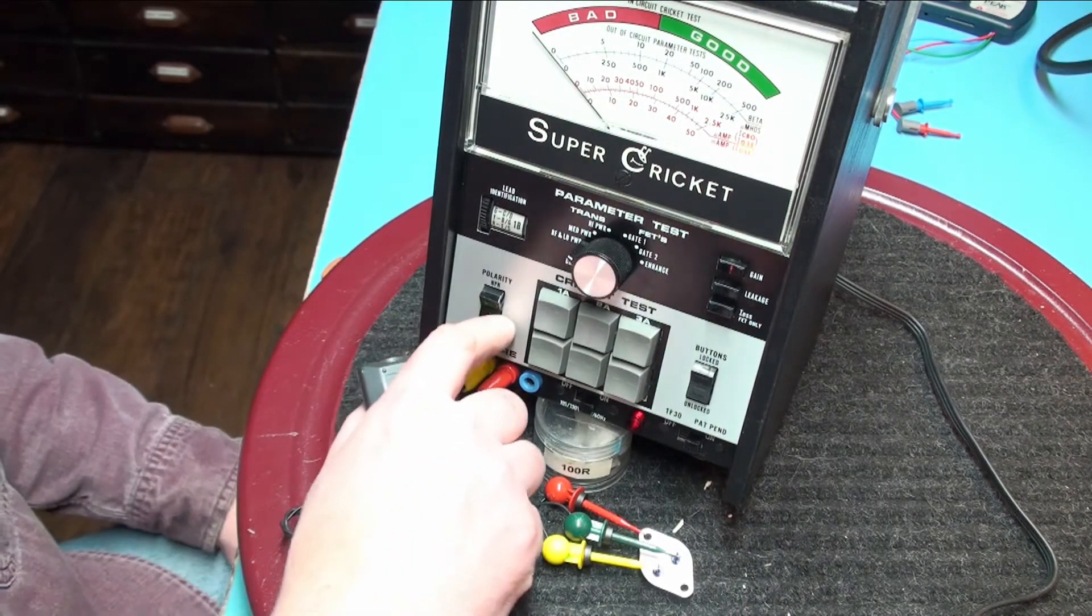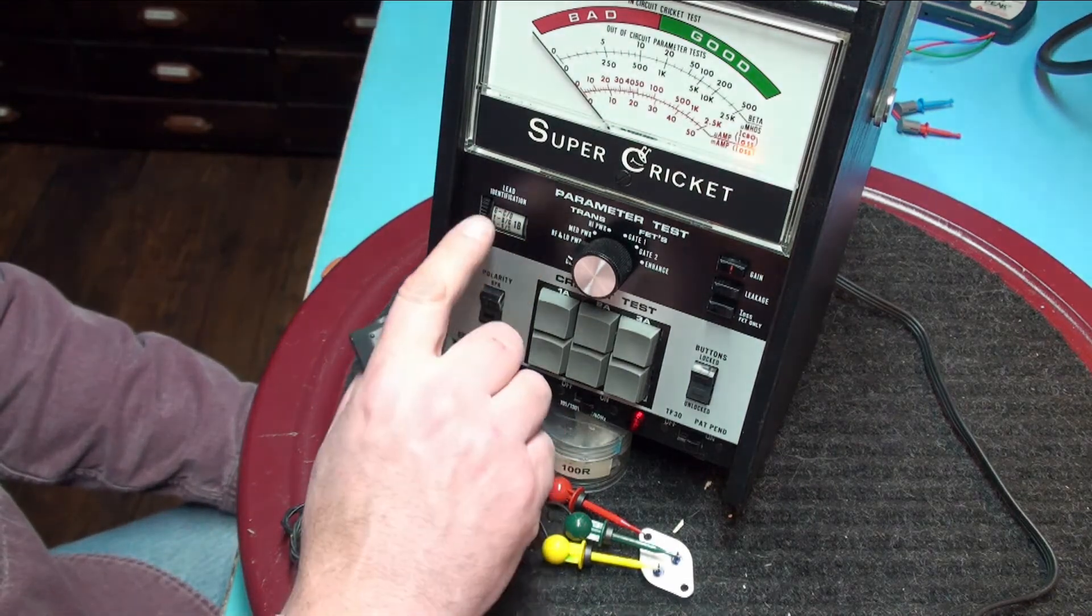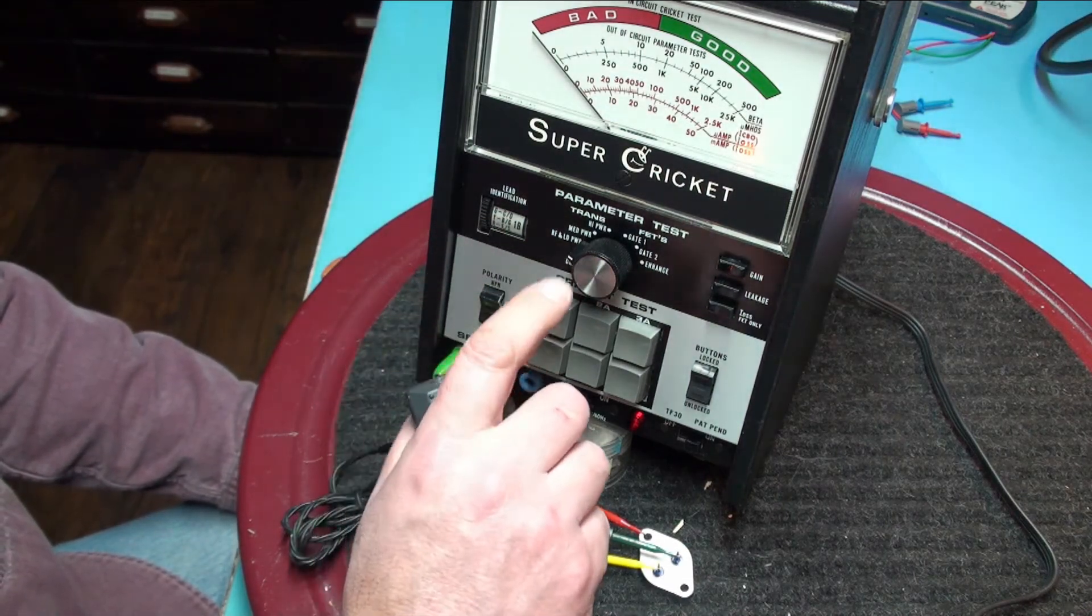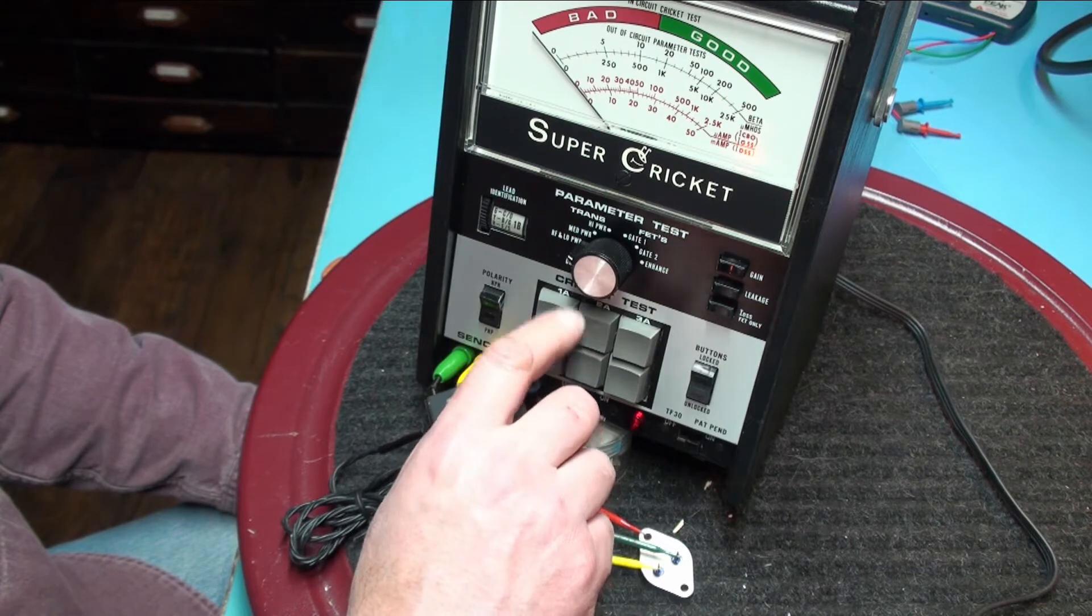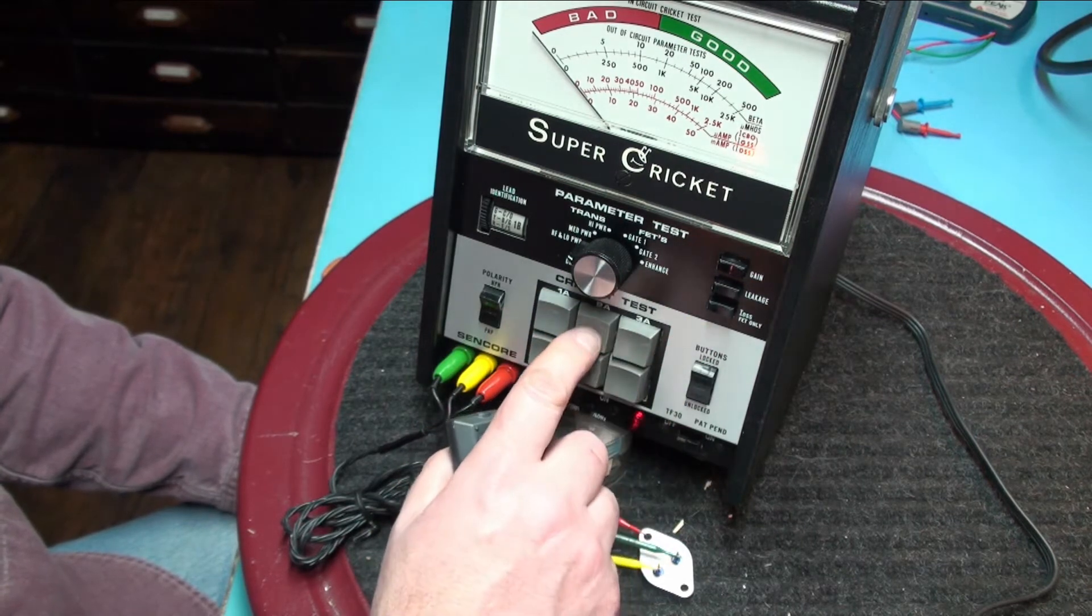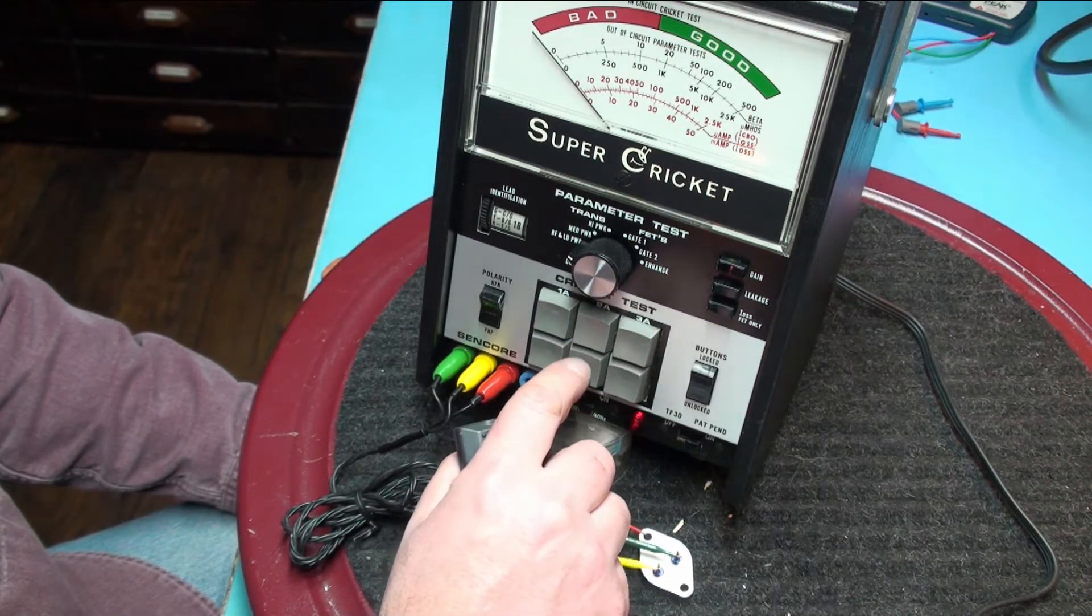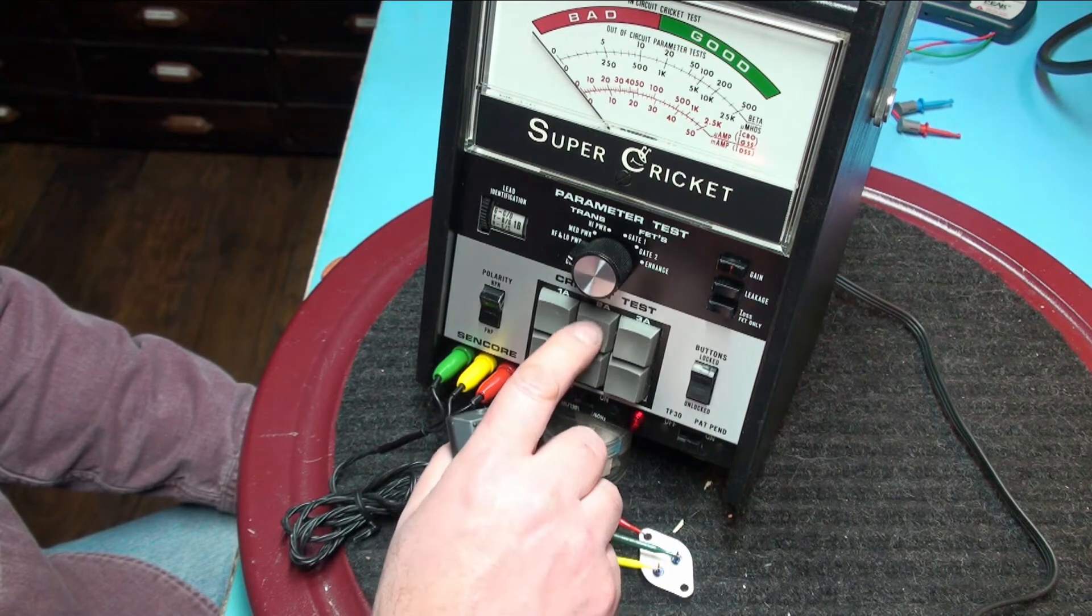Now that we determine the polarity we want to determine the lead identification. To do that we need to perform basically a gain test and we need to determine whether 2A or 2B has the highest gain.